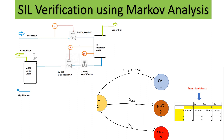From the last two videos we have been discussing about SIL verification using Markov analysis. We discussed states, state matrix, transition matrix, and calculated the PFD average value for one-out-of-one and one-out-of-two configurations. In this lecture I am going to discuss how to do complete SIL verification of a safety instrumented function using Markov analysis, and how to get the total PFD average value of the loop.